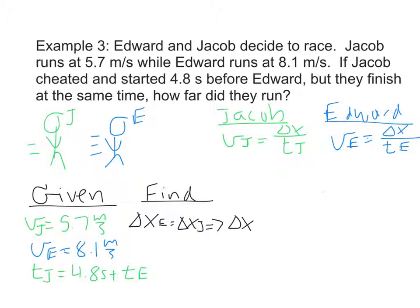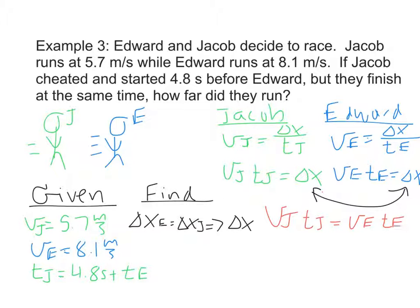The first thing I want to do is get rid of fractions, just because I don't like them. I tend to always multiply those out. So we have VJ TJ equaling delta X, and then over here we have VE TE equaling delta X. Again, because these delta X's are equal, I'm just going to set these two equal to each other. So that gives us VJ TJ equaling VE TE. I know VJ, I know VE, I have TJ in terms of TE right over here.